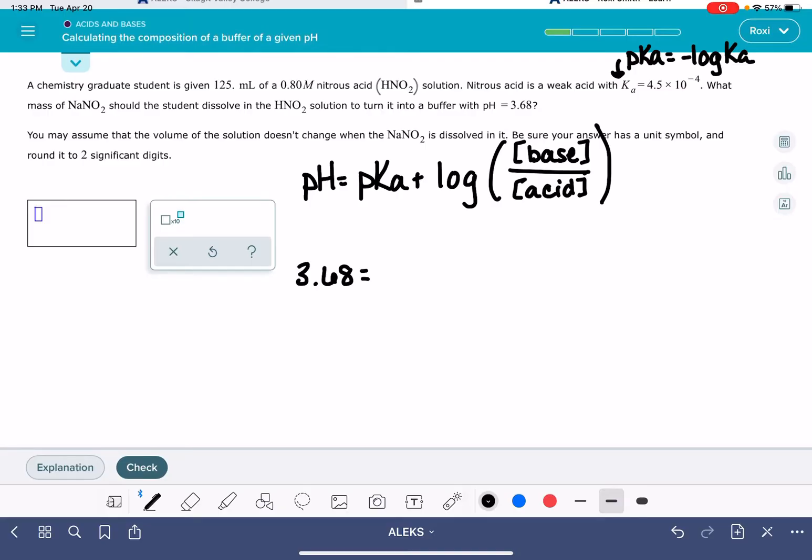If you were given a Kb, you could convert the Kb into a Ka and then convert that into a pKa. Negative log of 4.5 times 10 to the negative 4. I have a pKa of 3.347. I'm going to keep a lot of sig figs there.